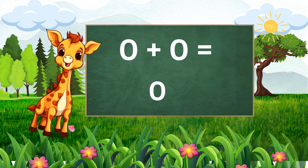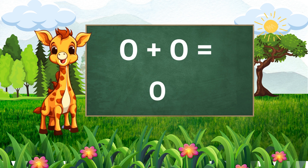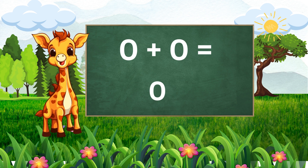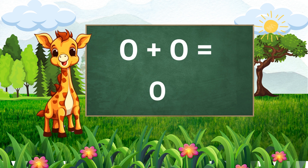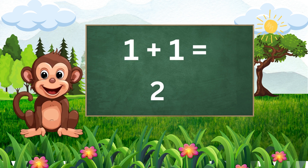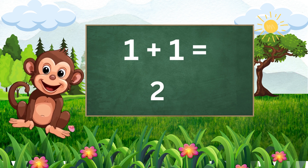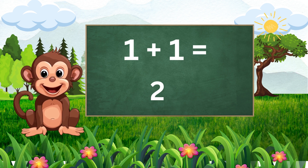Now let us journey forward. What happens when we combine one and one? Two. Excellent, monkey — one and one equals two.